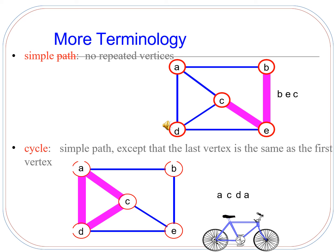What is a cycle? A cycle is a simple path except that the last vertex is the same as the first vertex. The example shown here goes from node A to C, C to D, and D to A again — this is known as a cycle where the first and last node, A, is the same.